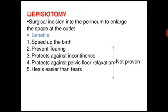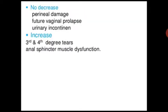Episiotomy is a surgical incision into the perineum to enlarge the space of the outlet. Benefits include: speeding up the birth, preventing tearing, protecting against incontinence and pelvic floor relaxation, and healing easier than a tear. Drawbacks include no decrease in perineal damage for future vaginal prolapse or urinary incontinence, and increased third and fourth degree tears and anal sphincter muscle dysfunction.